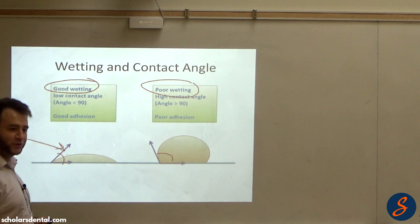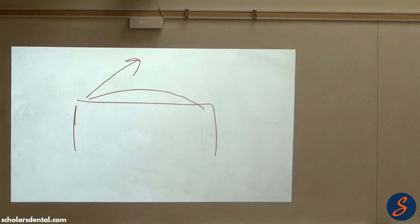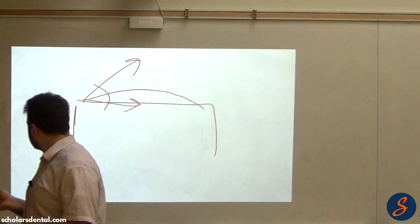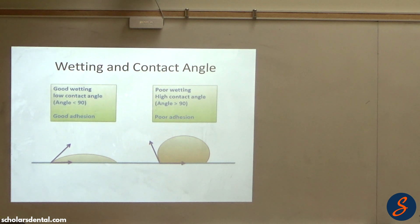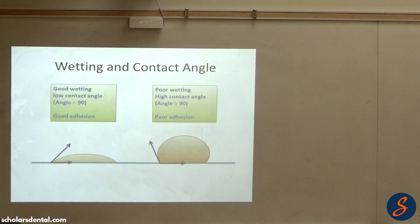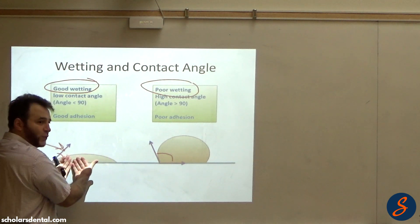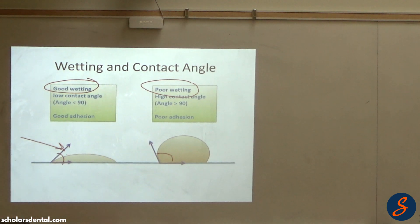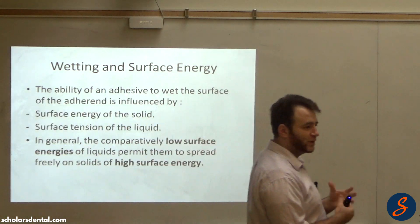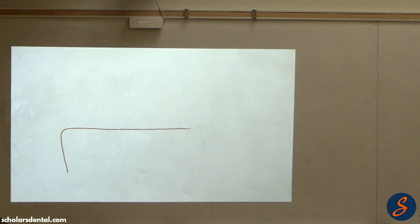The contact angle is measured toward the drop. If the drop spreads over the surface, the angle toward the drop is low. Good wetting with spreading gives a low contact angle. To get good adhesion we need good wetting, which means a low contact angle under 90°. Poor wetting means a high contact angle over 90°. What determines wettability? The answer is surface energy of the solid and surface tension of the liquid.